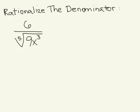Here we have a problem where we've been asked to rationalize the denominator. In this case, the denominator contains a radical with a fifth root. To rationalize the denominator means that we want to rewrite this expression in an equivalent form which does not contain a radical in the denominator.